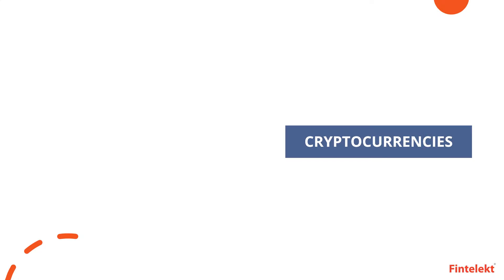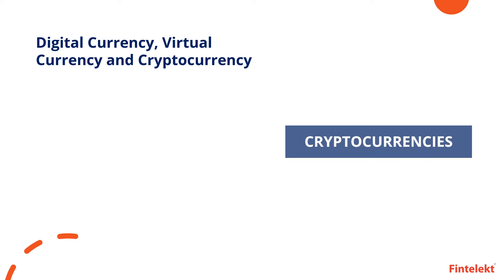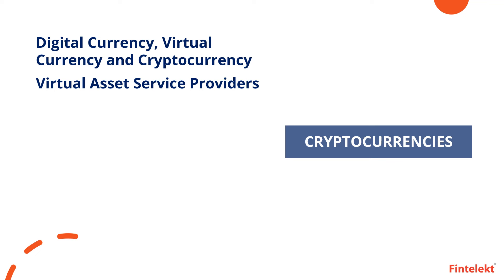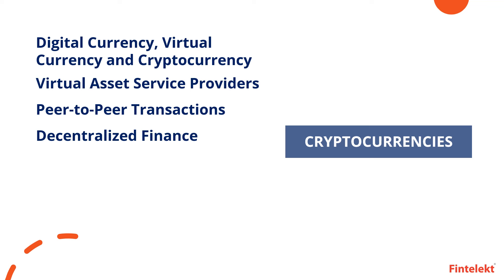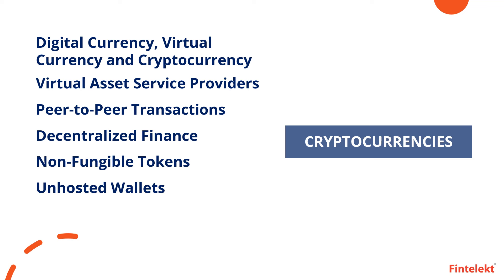We will explain the difference between digital currency, virtual currency, and cryptocurrency. We will also define terms such as virtual asset service providers, peer-to-peer transactions, decentralized finance, non-fungible tokens, unhosted wallets, and hot and cold wallets.